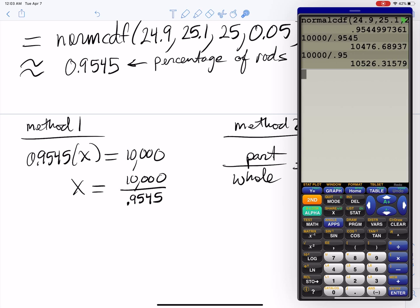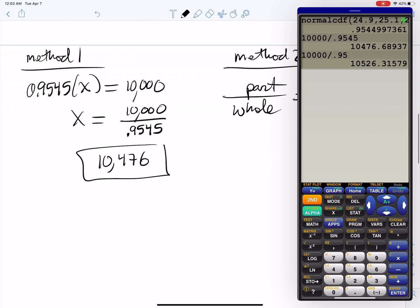You need to be precise if you want to get this answer correct. There's a level of tolerance they'll accept. So it's basically 10,476 you need to produce. You can check your answer because 0.9545 times 10,476 should give you your 10,000 rods. So 10,476 times 0.9545 gives you 10,000 exactly.